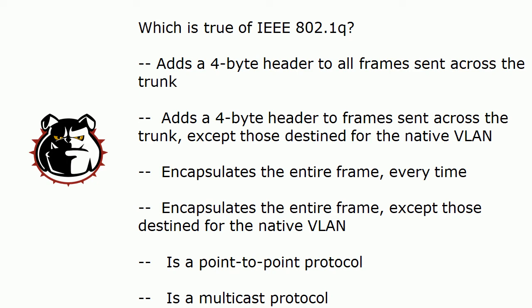Which of these is true? It adds a four-byte header to all frames sent across the trunk. It adds a four-byte header to frames sent across the trunk unless they're destined for the native VLAN. It encapsulates the entire frame every time. Encapsulates the entire frame except frames destined for the native VLAN. It is a point-to-point protocol. It is a multicast protocol.